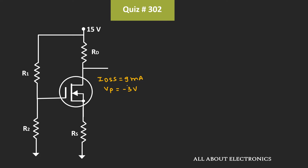We have been given that the required drain current ID is equal to 4mA. Assuming the MOSFET is operating in the saturation region, we can assume that the drain current ID can be given by Shockley's equation. That means drain current ID is equal to IDSS times (1 minus VGS divided by VP) whole square.